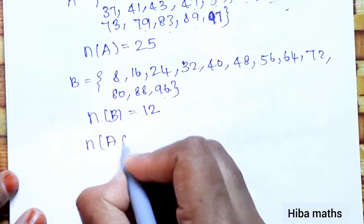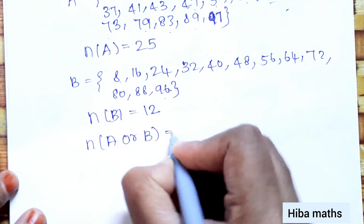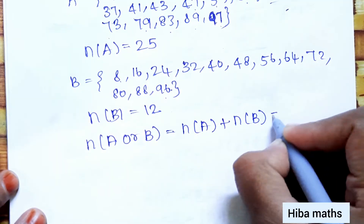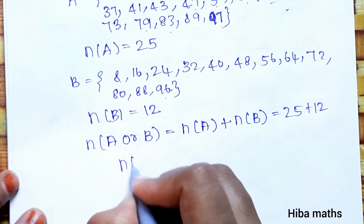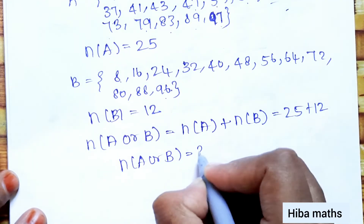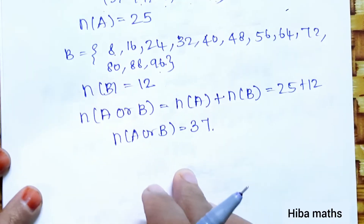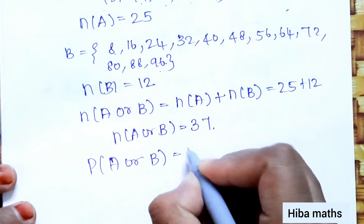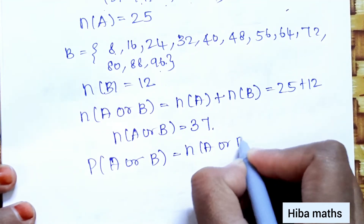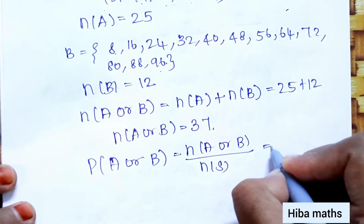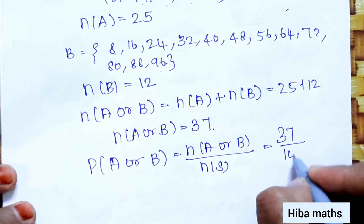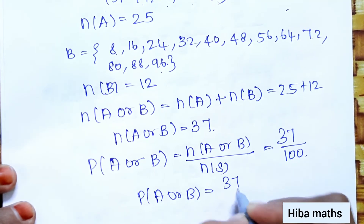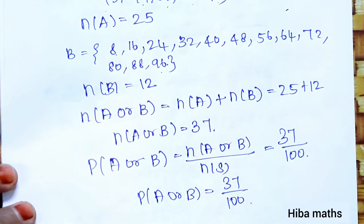Therefore, n(A∪B) = n(A) + n(B) = 25 + 12 = 37. The probability of A or B is n(A∪B) divided by n(S), which equals 37 divided by 100. So P(A or B) = 37/100. Thank you so much for watching.